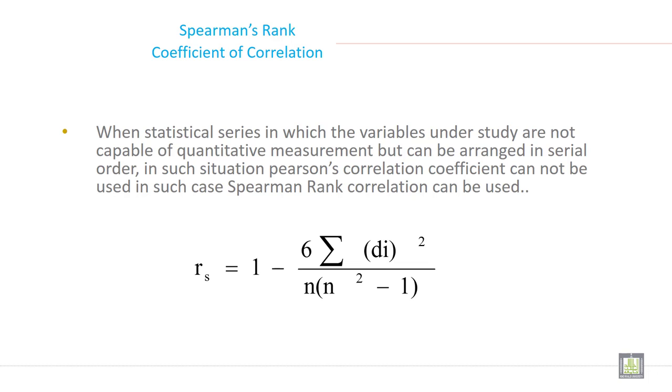The formula for Spearman Rank Correlation is: r_s = 1 minus 6 summation d squared divided by n(n squared minus 1).